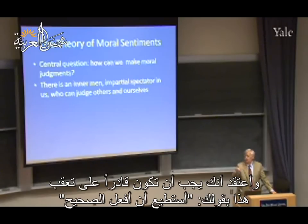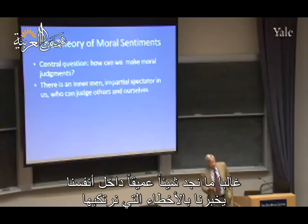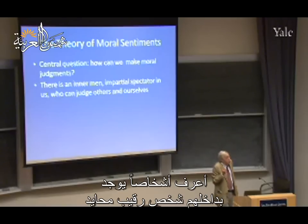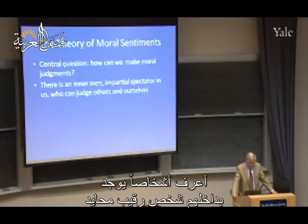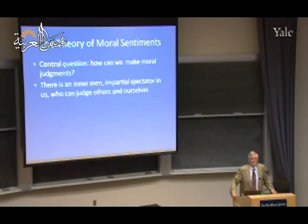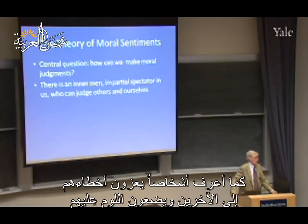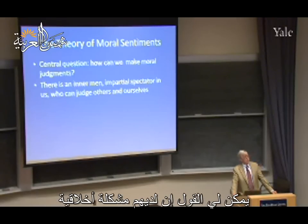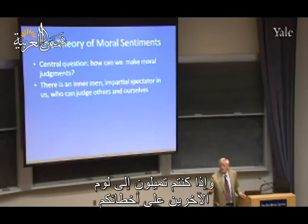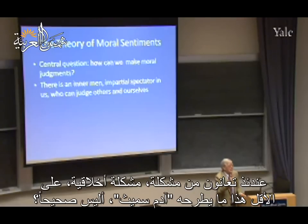There is something inside yourself - and inside myself - which tells you that was a mistake, that was a foolish thing, I should not have done so. I know people with a very weak impartial internal spectator who have great difficulty ever admitting they made a mistake and always blame others. Adam Smith would say they have a moral problem: if your inner self never tells you that you were wrong and you always blame others, you have an ethical problem.